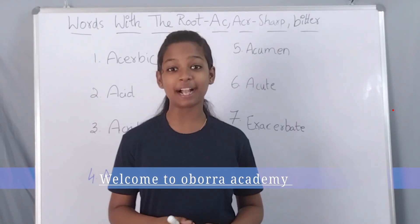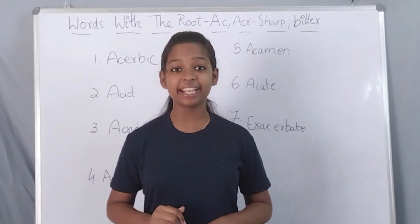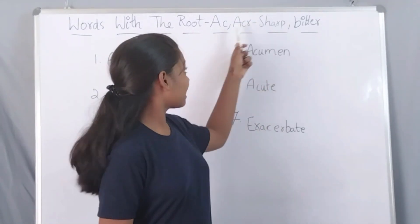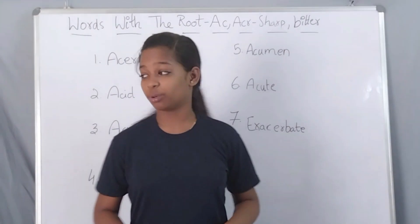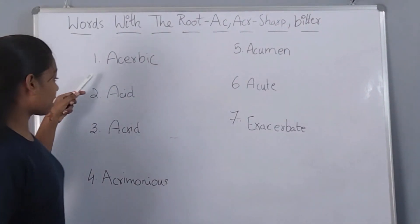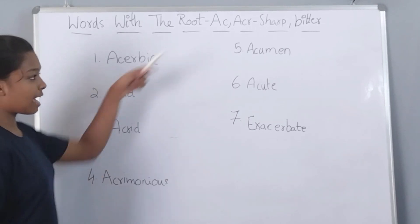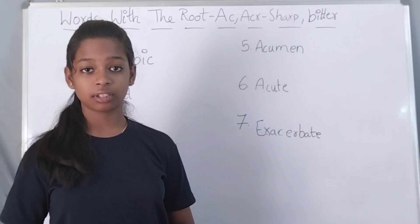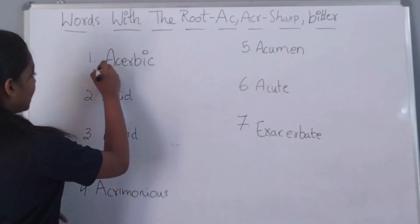Hi friends, welcome back to Obora Academy. I am Gayathri. Today in this session we are going to see the root word AC or ACR which means sharp or bitter. The words for today are acerbic, acid, acrid, acrimonious, acumen, acute, and exacerbate. The first word for today is acerbic.